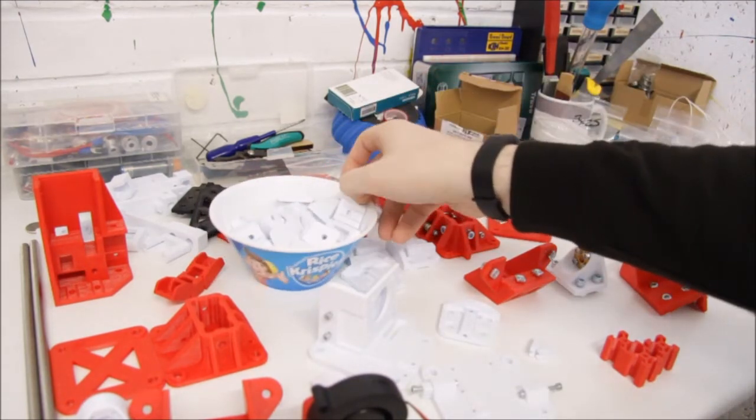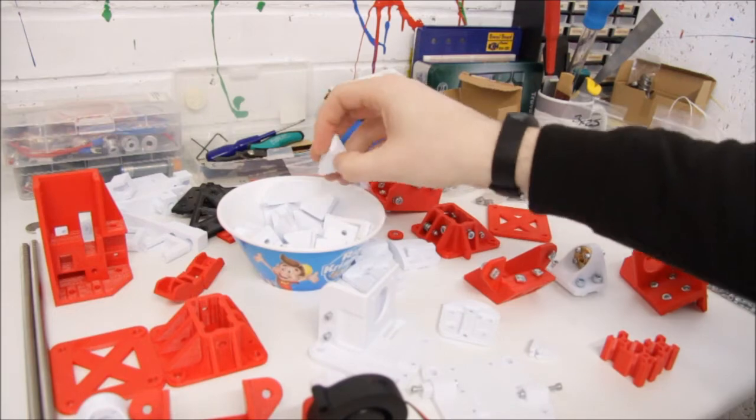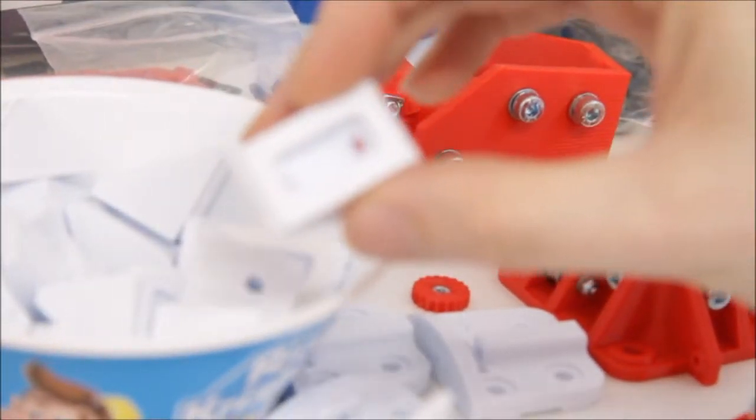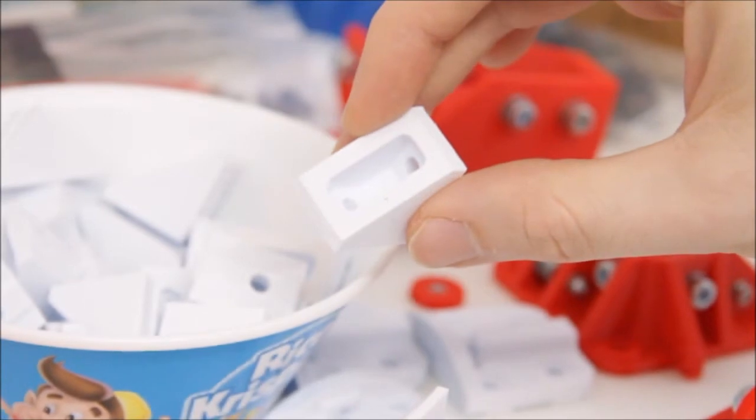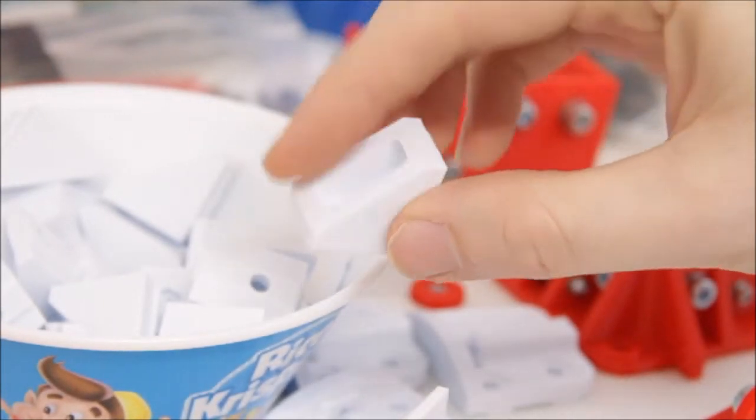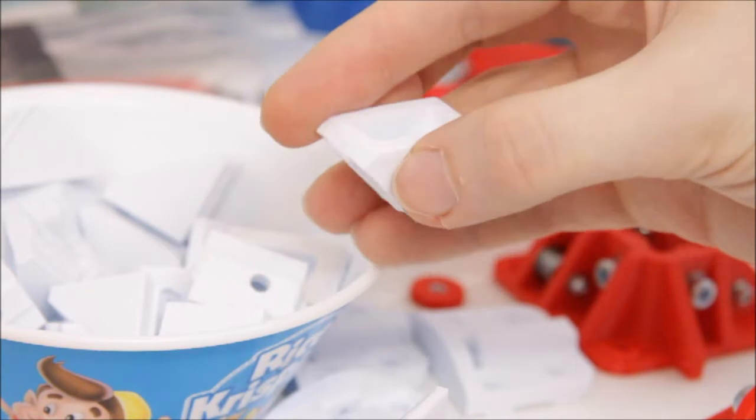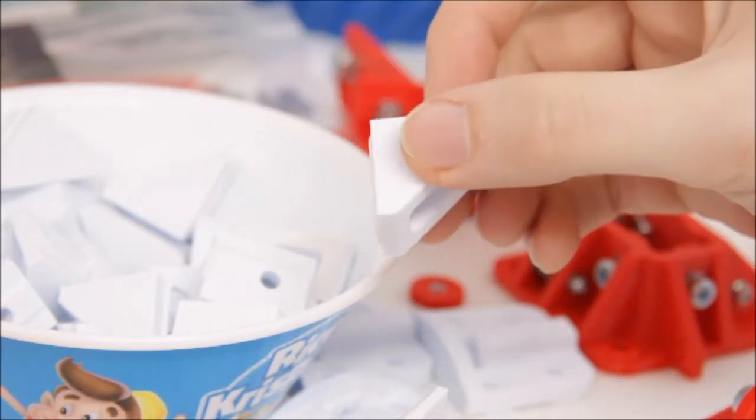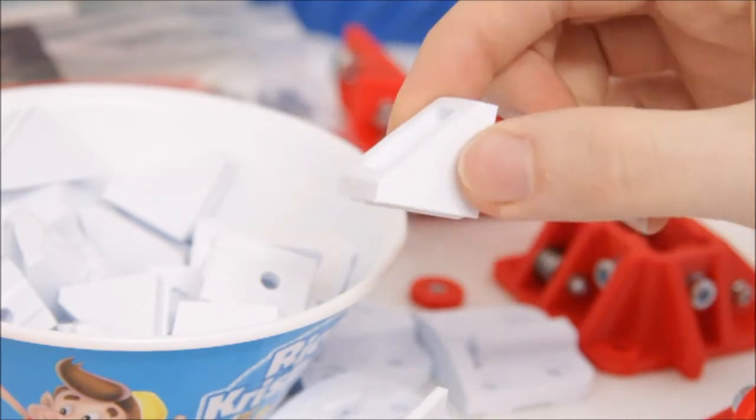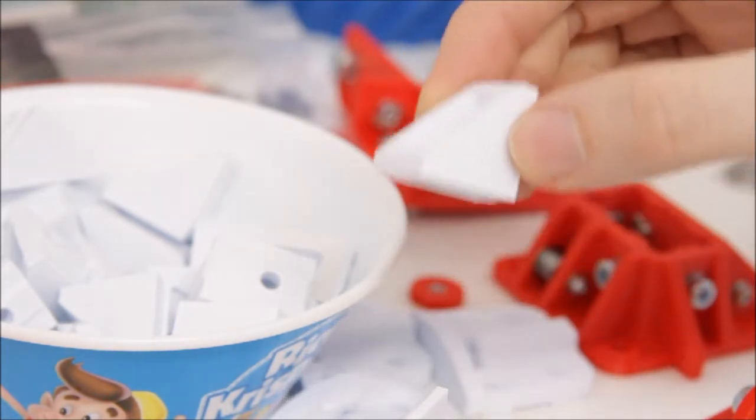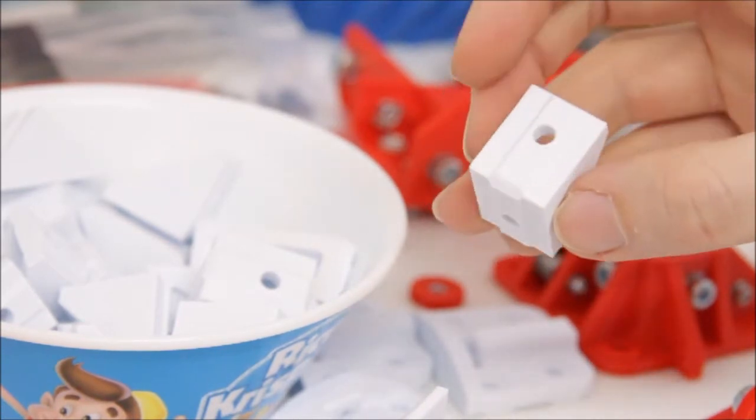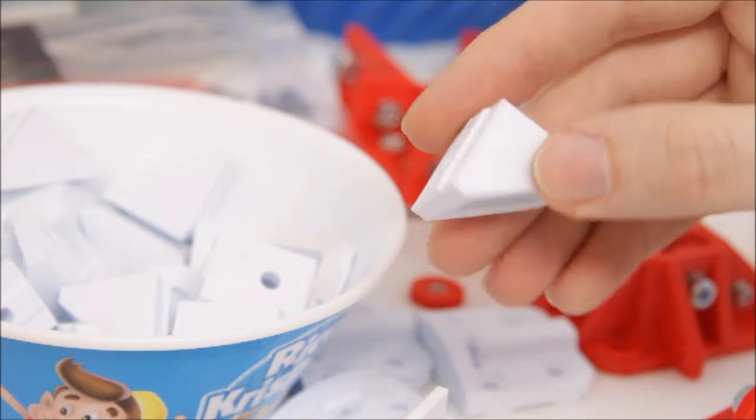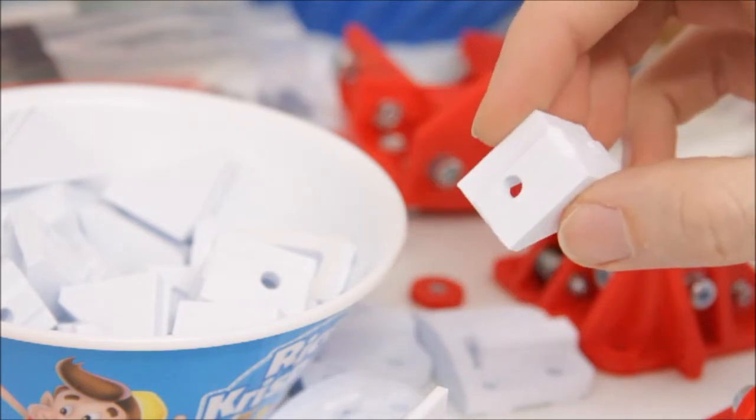So in this bowl, this lovely Rice Krispies bowl, these parts here are the corner brackets, 3D printed. You can optionally buy metal versions of these but I wanted to go with as much 3D printed parts as possible. So there's approximately 16 of these I believe. I might have printed a few extras just in case I needed them.